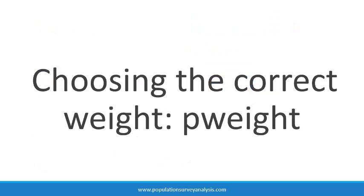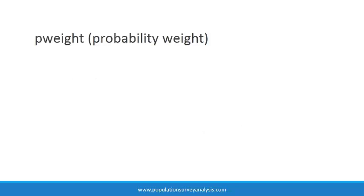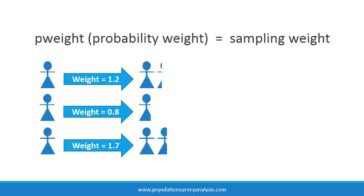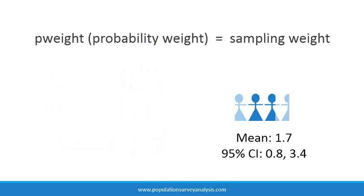One of the most common mistakes made when analyzing data from sample surveys is specifying an incorrect type of weight for the sampling weights. Only one of the four weight keywords provided by Stata, p-weight, is correct to use for sampling weights. Probability weights are another name for sampling weights. The p-weight command causes Stata to use the sampling weight as the number of subjects in the population that each observation represents when computing estimates such as proportions, means, and regression parameters. A robust variance estimation technique will automatically be used to adjust for the design characteristics so that the variances, standard errors, and confidence intervals are correct.